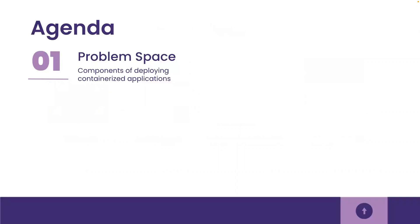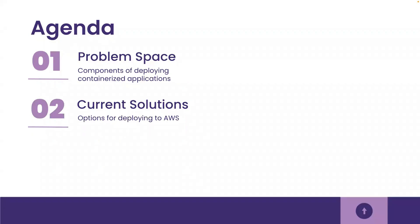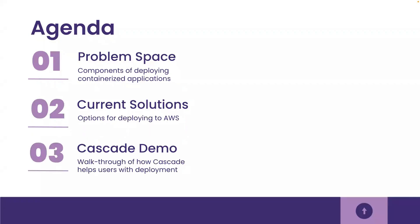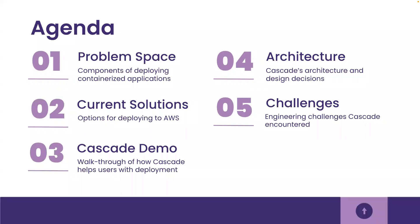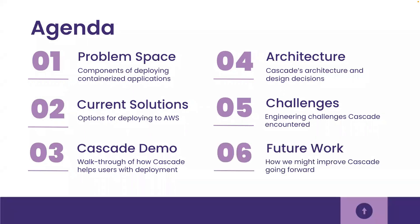Some background knowledge and the challenges related to deploying software is necessary for understanding Cascade. First on the agenda, I'm going to walk you through the problem space. Next, Ewan is going to explain the current solutions. Then Anne will walk us through a demo of Cascade. After that, Natalie will address three final topics: Cascade's architecture, the challenges encountered while building the application, and where Cascade should go from here.